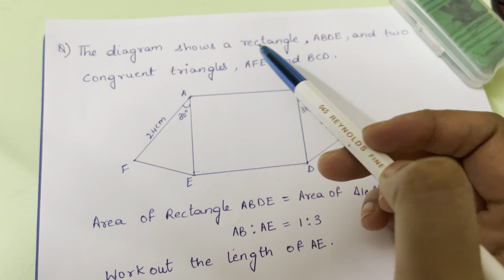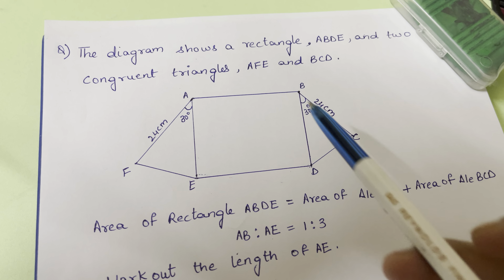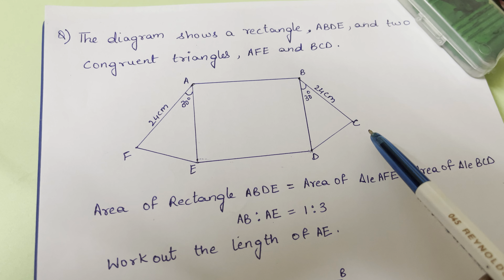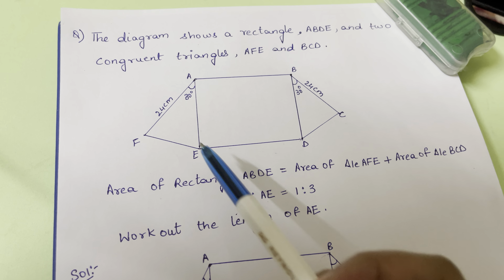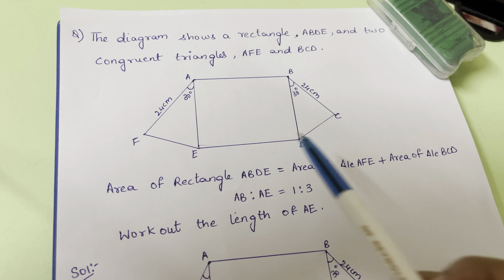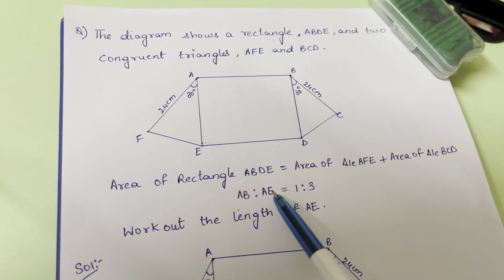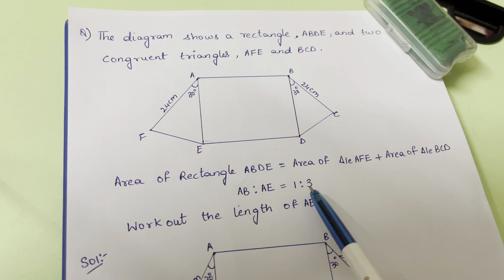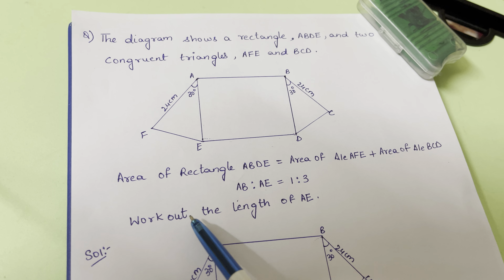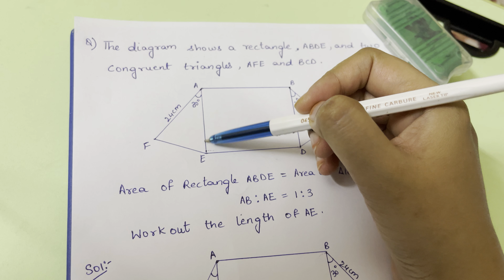The diagram shows a rectangle ABDE and two congruent triangles AFE and BCD. The area of rectangle ABDE equals the area of triangle AFE plus the area of triangle BCD. AB to AE is in the ratio 1:3. We need to work out the length of AE.